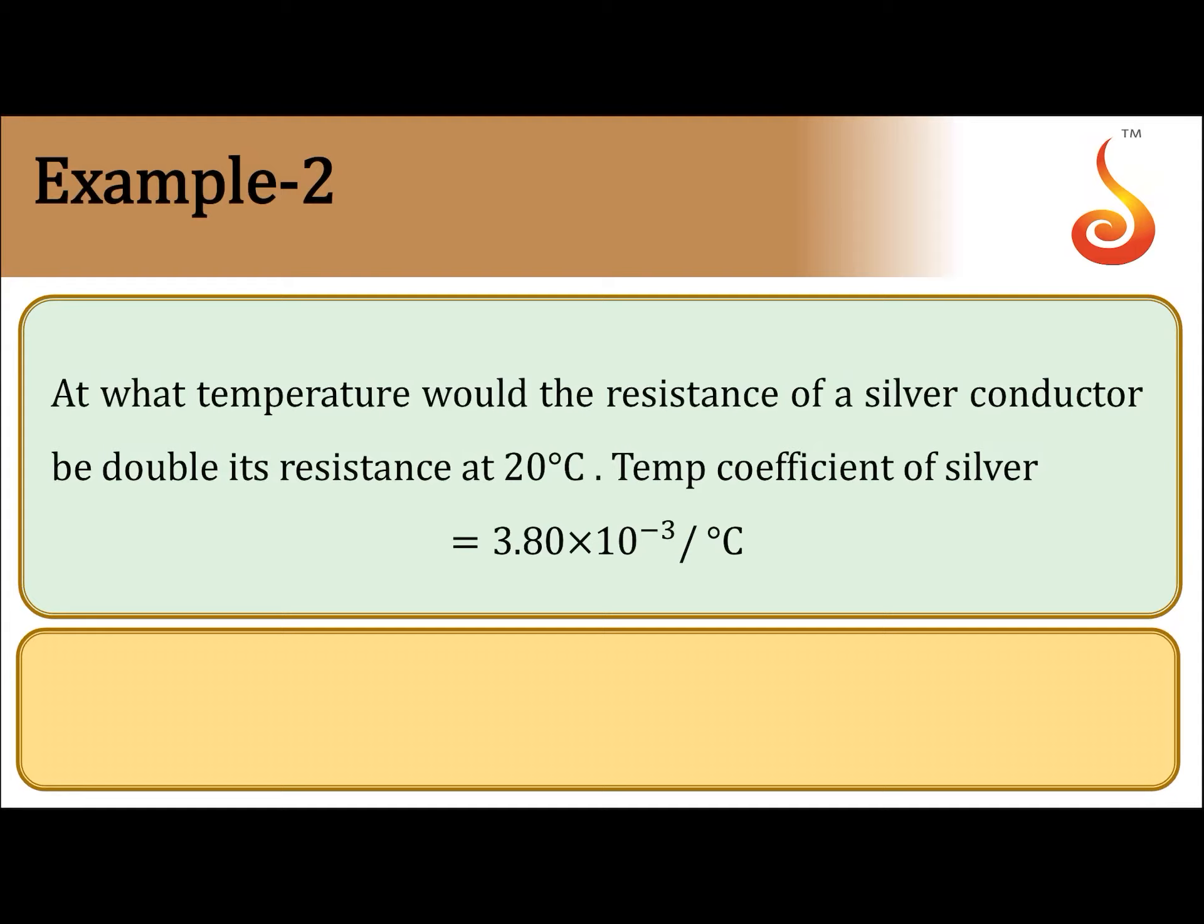Example number 2: At what temperature would the resistance of a silver conductor be double its resistance at 20 degrees Celsius? Temperature coefficient of silver is 3.8 × 10^-3 per degree Celsius.